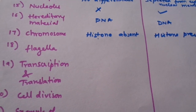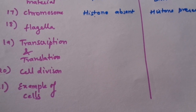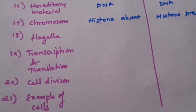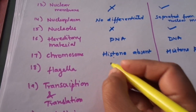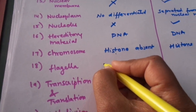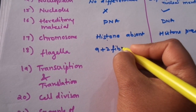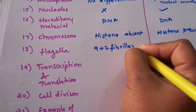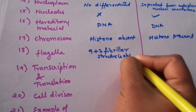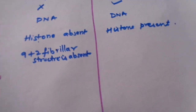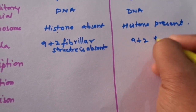Then comes flagella. Flagella are present in certain species of both prokaryotic and eukaryotic cells. In the case of prokaryotic cells, the 9+2 fibril structure is lacking. But if flagella are present in eukaryotic cells, then they have the 9+2 fibril structure.